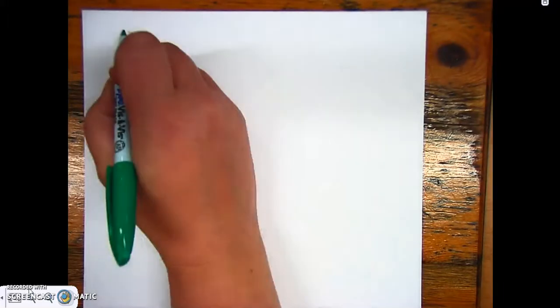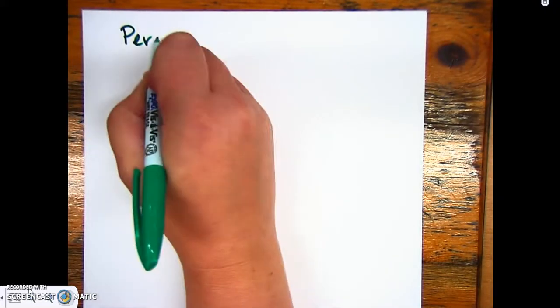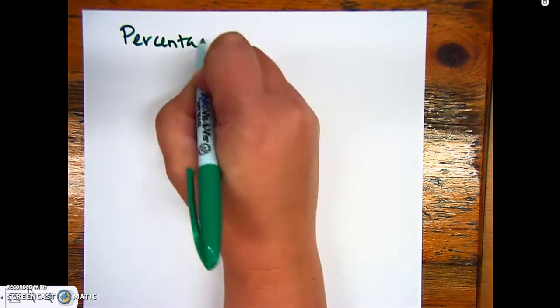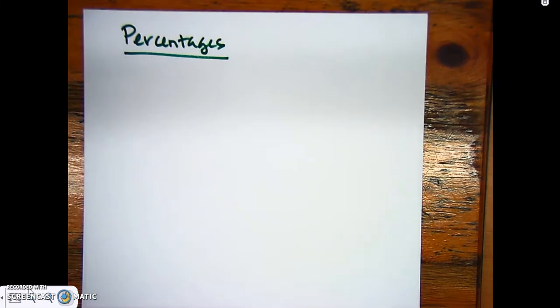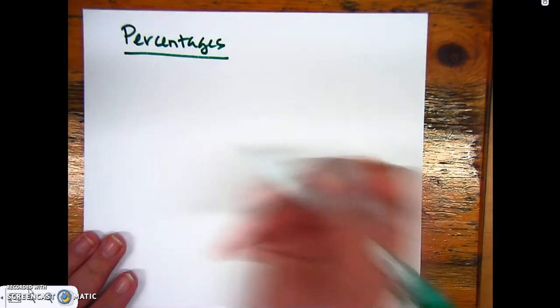In chemistry, we're going to be talking about percentages. We'll use percentages to calculate the amount of one type of element that might be in a compound, or how much a percent solution is. I'm going to do a quick review of how to calculate a percentage.